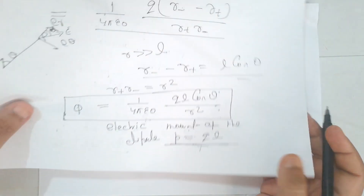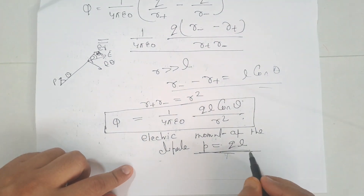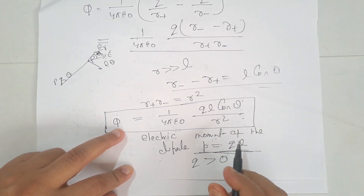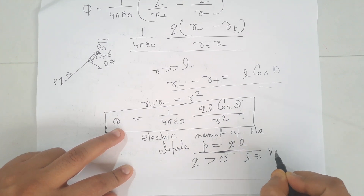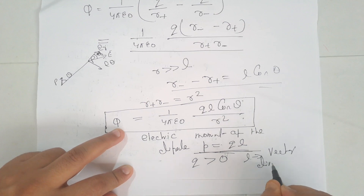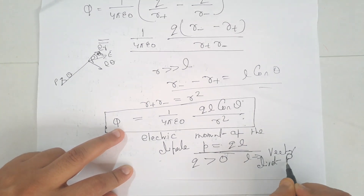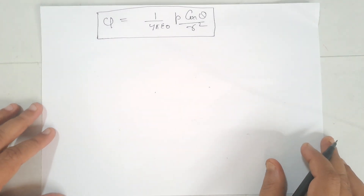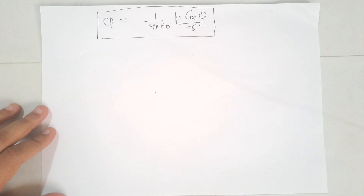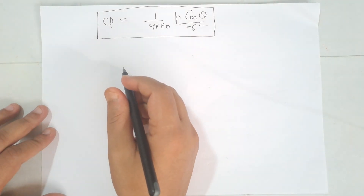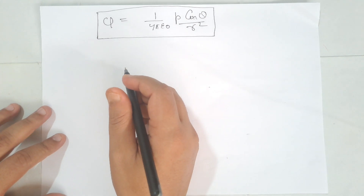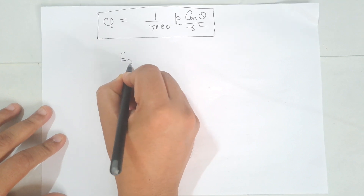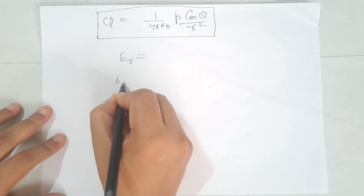Here Q is greater than zero, and L is the vector directed toward point P. Now we can calculate the dipole field, or electric field. We can calculate the dipole field electric field E-R and E-theta along the unit vectors using the polar coordinate system: E-R equals minus del phi over del R, and E-theta equals minus (1/R) del phi over del theta.